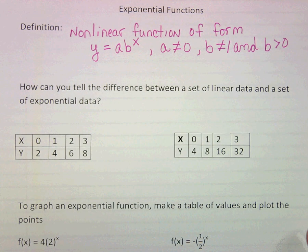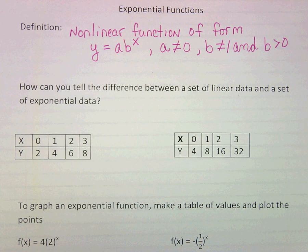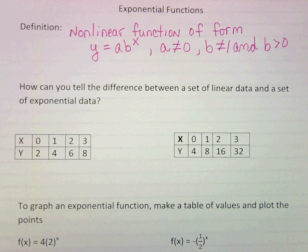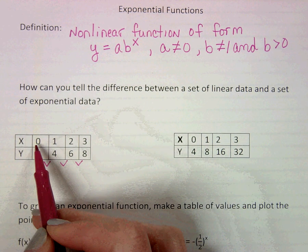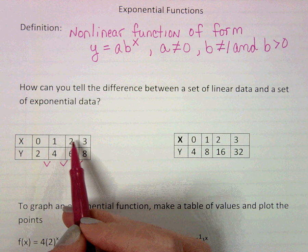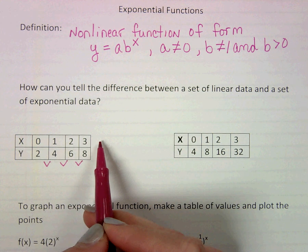So how can you tell the difference between a set of linear data and a set of exponential data? So here's two tables. One of the key things is we want to look at the pattern. We want to see what's happening between our y values. We can note that our x values are all in consecutive order because that's important, too.